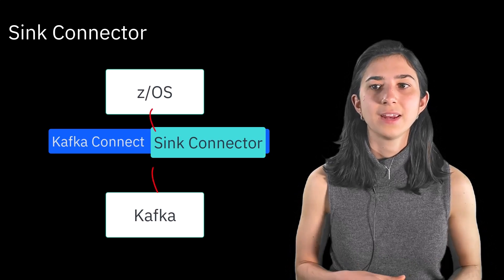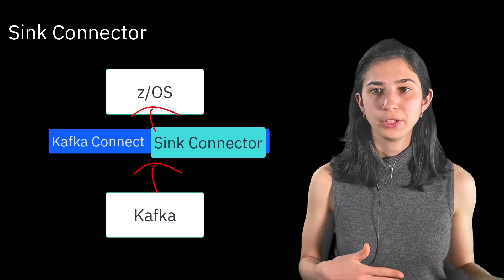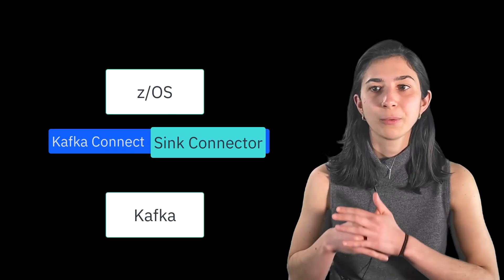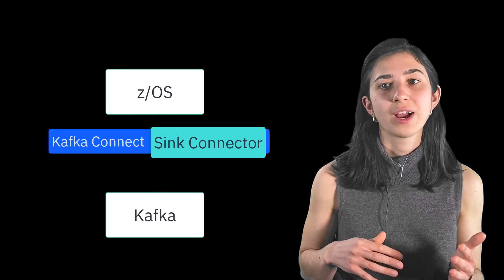You can either use Kafka connector as a sink connector or as a source connector. A sink connector passes data in the direction of Kafka to MQ, whereas the source connector passes message data in the direction of MQ to Kafka.